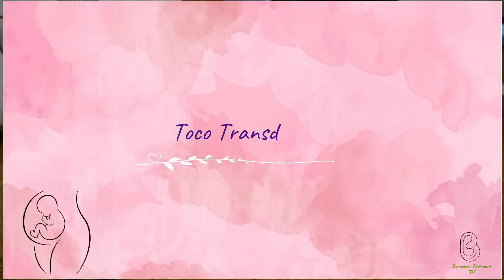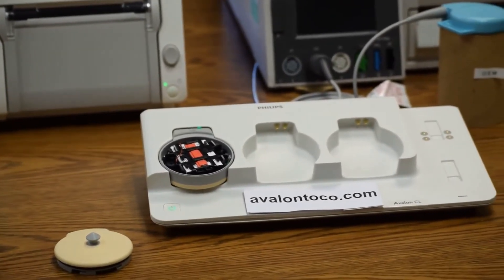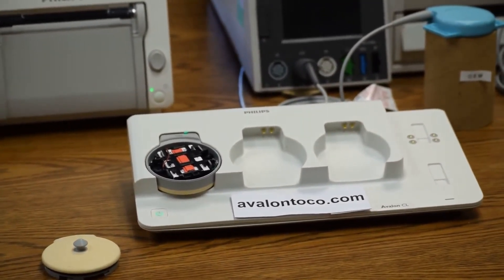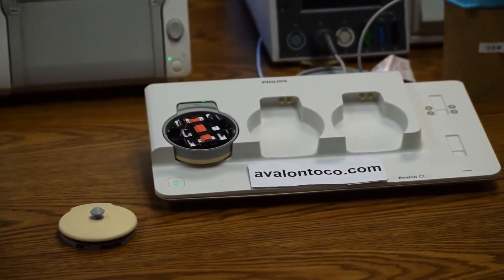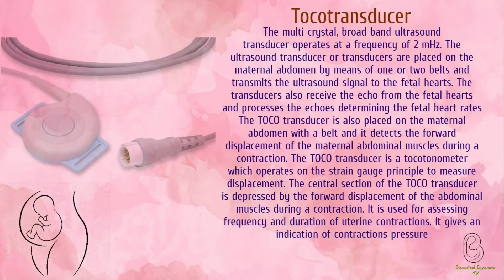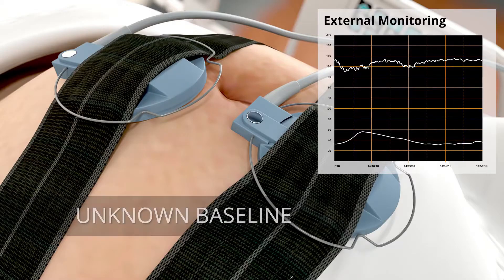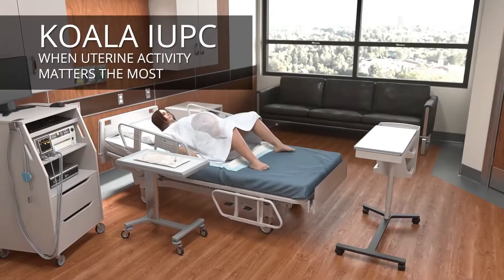A tocodynometer, or TOCO for short, is a transducer pressure-sensing device that detects changes in the abdomen as the uterus tightens during a contraction. It marks how often contractions occur and the length of each, producing a graph that looks like a series of hills rolling across the bottom of the printout. The external contraction monitor cannot tell how strong a contraction is, since the size of the hill is affected by the tightness of the belt and whether the patient is thin or heavy. If a precise measurement of contraction strength is needed, an internal pressure monitor can be placed inside the uterus.